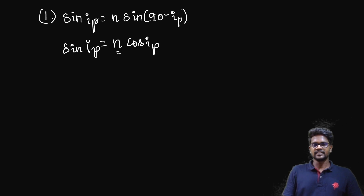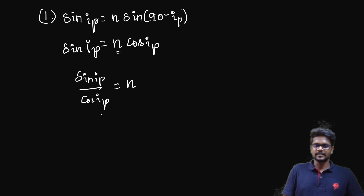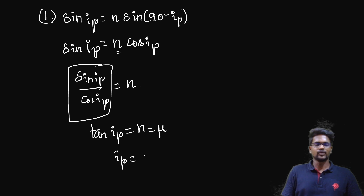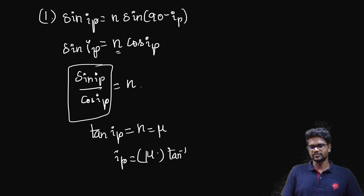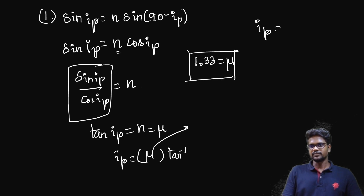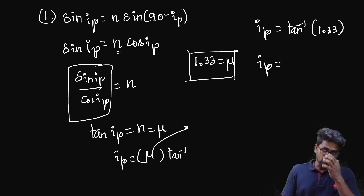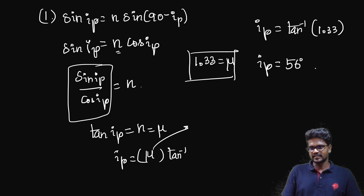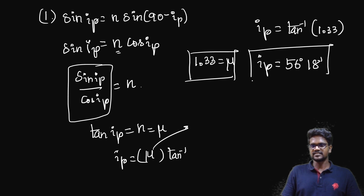Correct. So tan IP equals n, where n is the refractive index of the second medium, which is mu. Therefore IP equals tan inverse of mu. This is Brewster's law. The value of mu we know is 1.33 for glass. So IP equals tan inverse of 1.33. Looking at the log or tan table for the value 1.33, the answer is 56 degrees 18 minutes. This is our polarizing angle, which is also the Brewster angle.